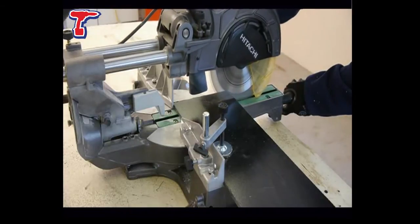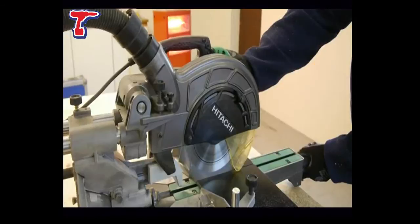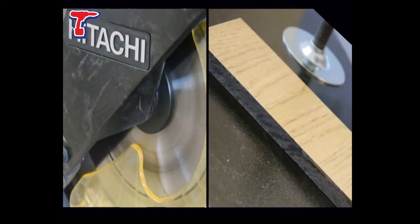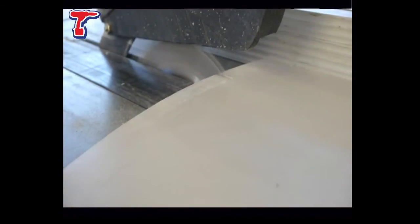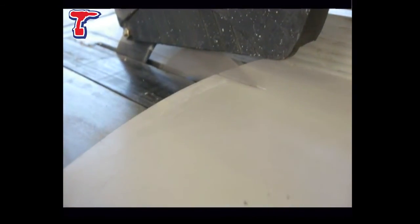Trespa high-performance panels are incredibly dense, but the FiberFast blade still ticks all the boxes for speed, life and neatness of cut. Glass-reinforced plastic, or GRP, is dealt with equally as well.